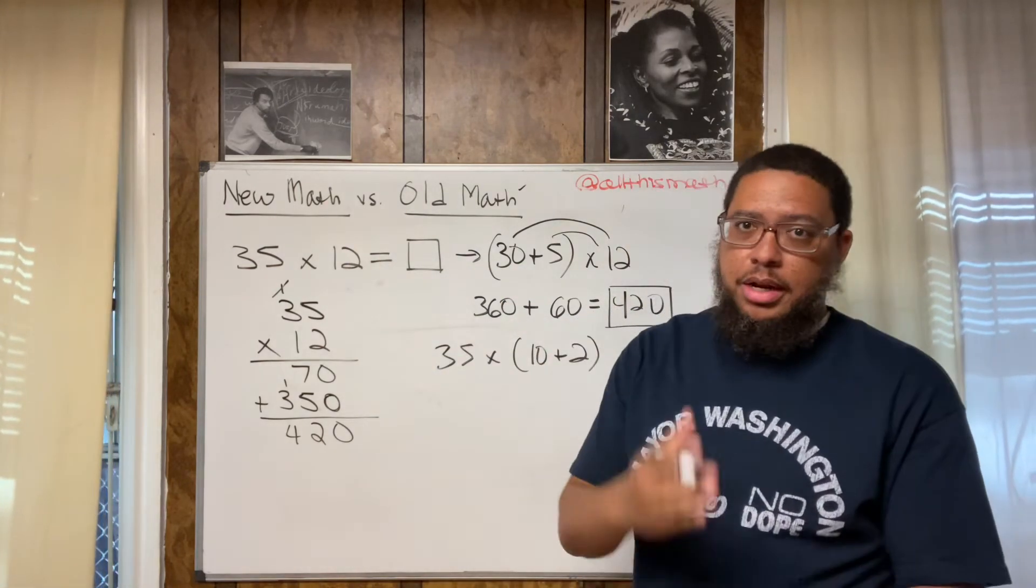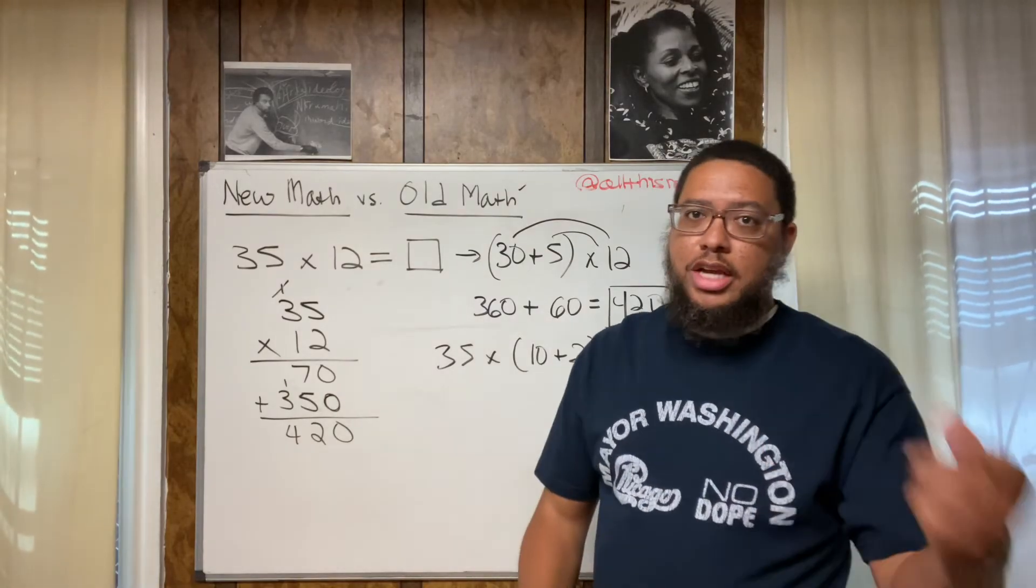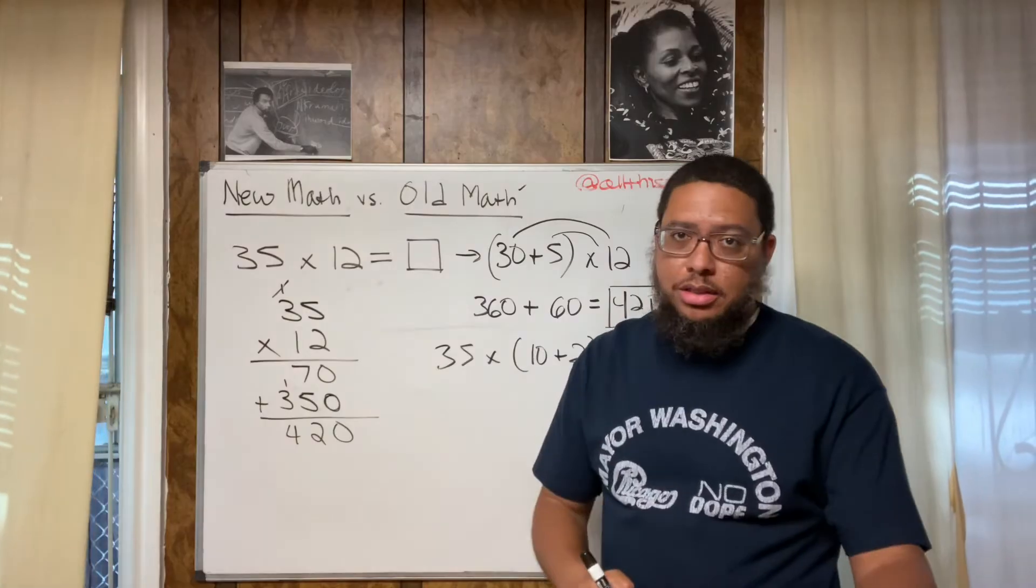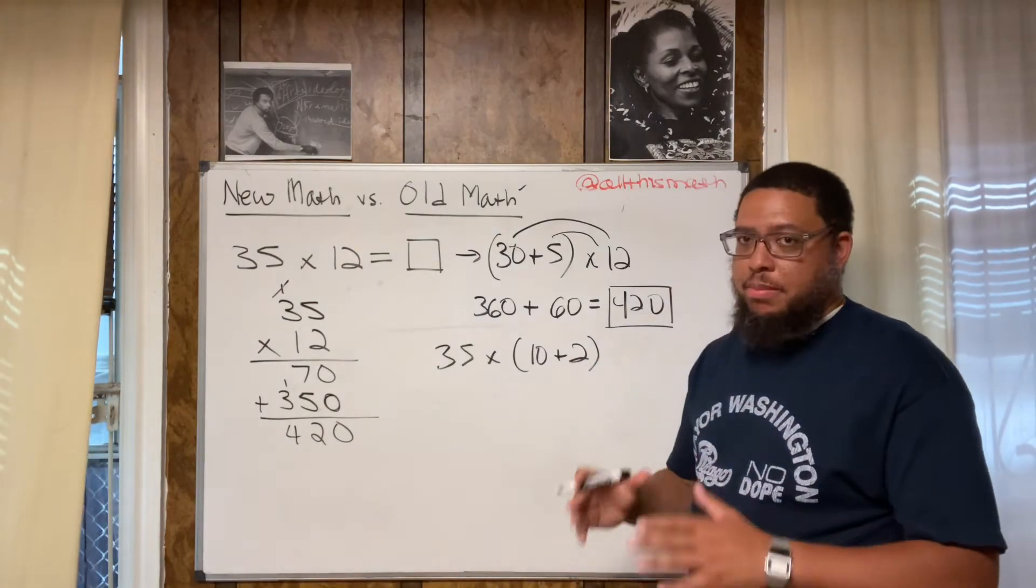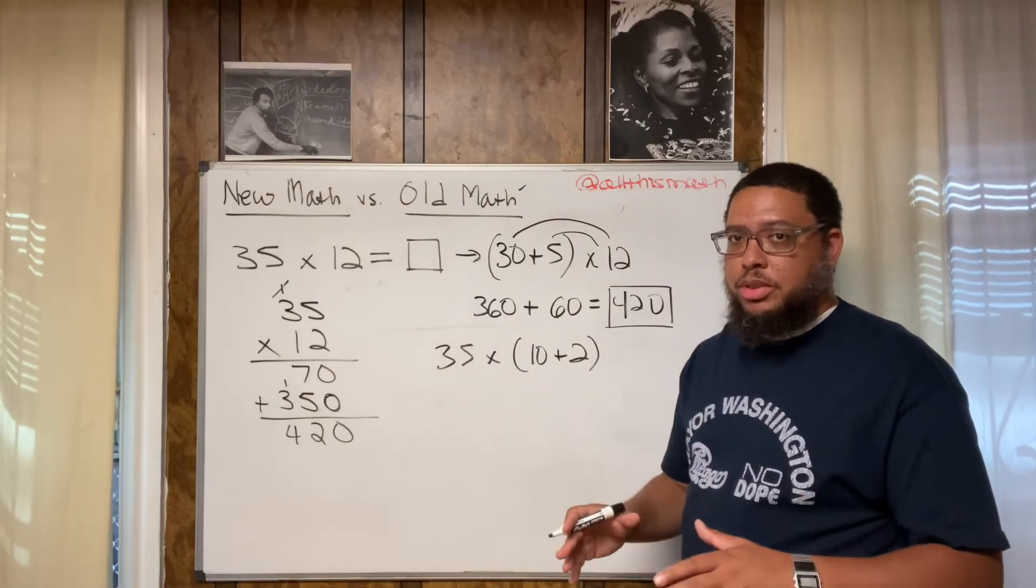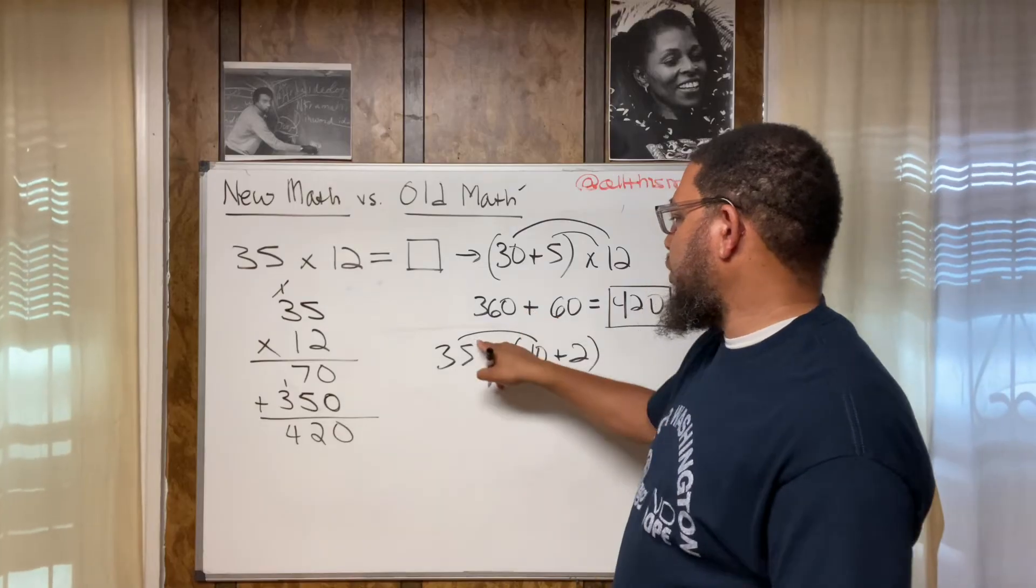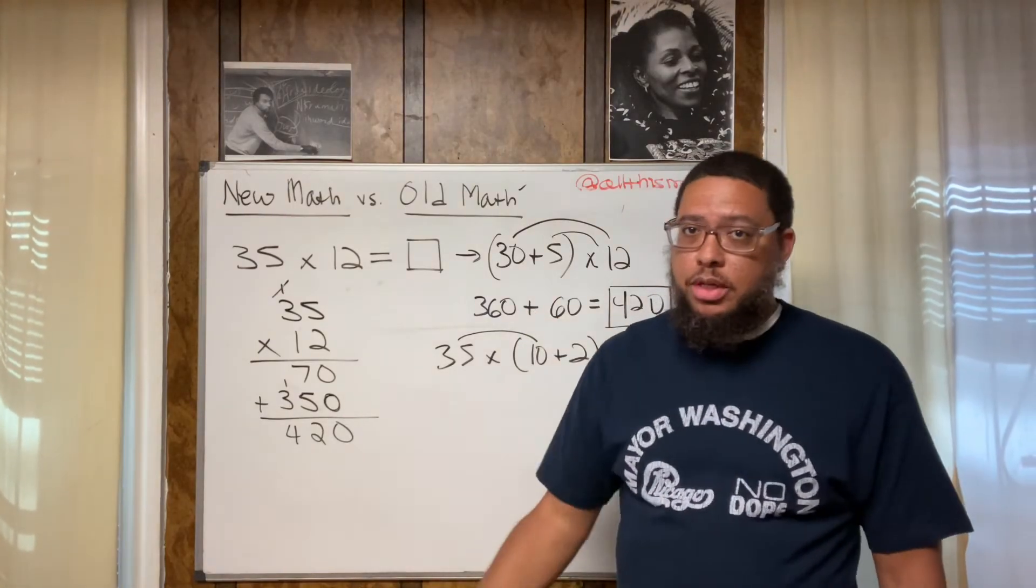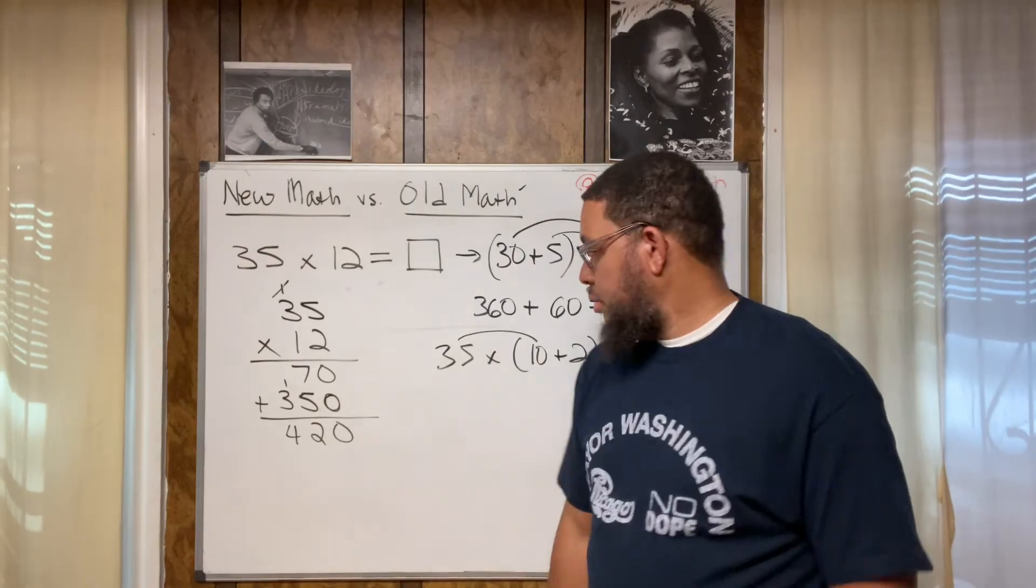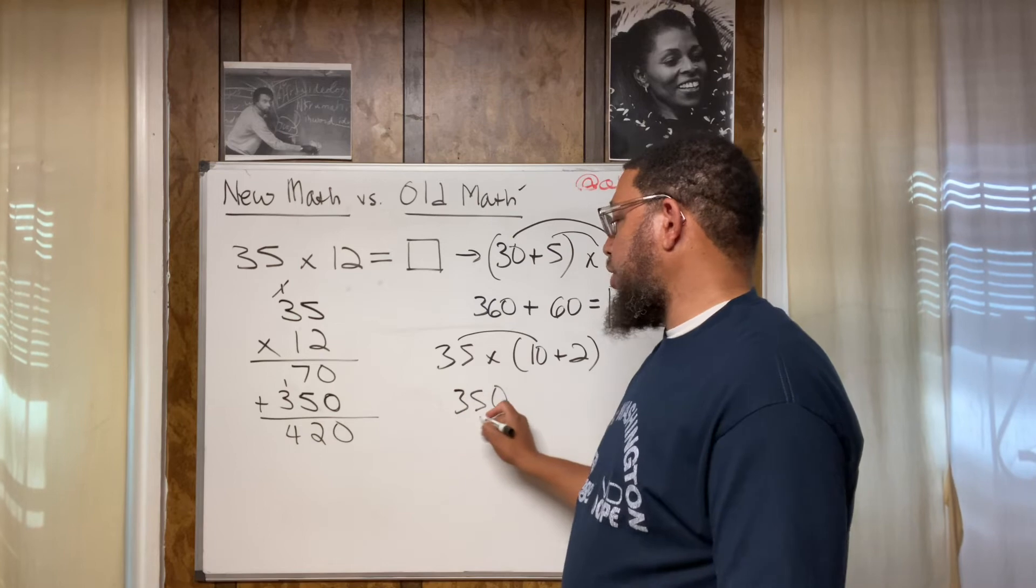That math fluency and that number sense, they're going to be able to figure stuff out when they take their next algebra class or their next geometry class or their pre-calculus or statistics or calculus or whatever. That mathematical fluency and that number sense is going to be helpful. So anyway, we go back to the distributive property. So we do 35 times 10. 35 times 10 is the same thing as doing 35 times one and attach the zero at the end. So that's going to give me 350 because 35 times one is just 35.